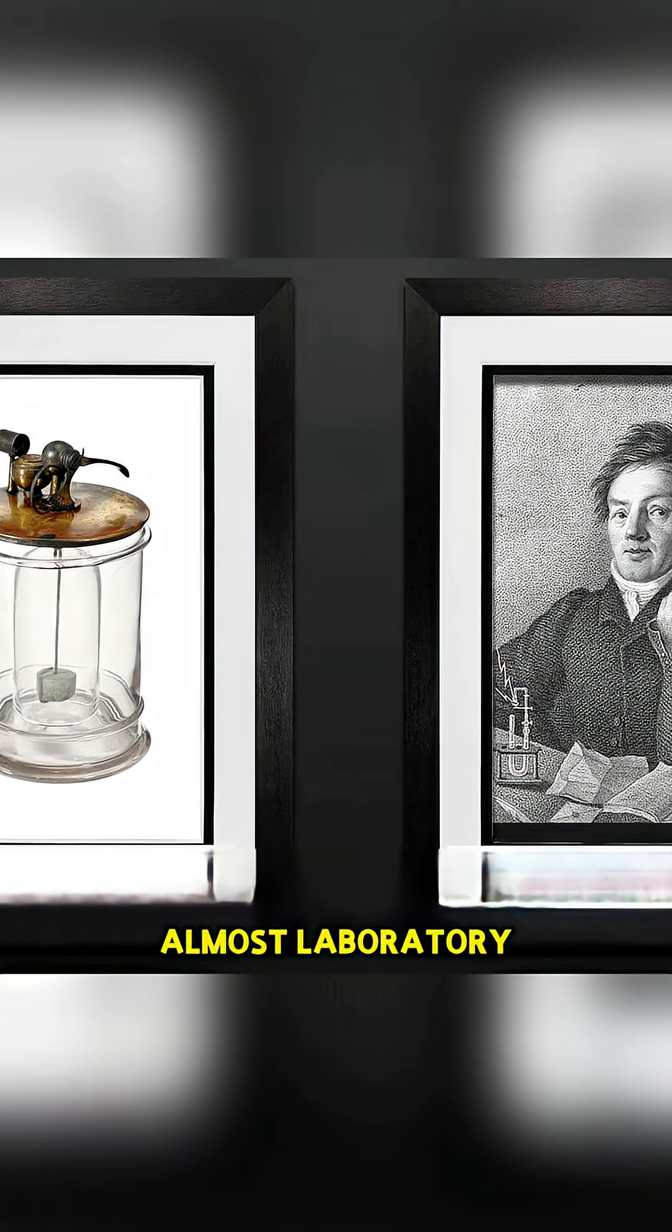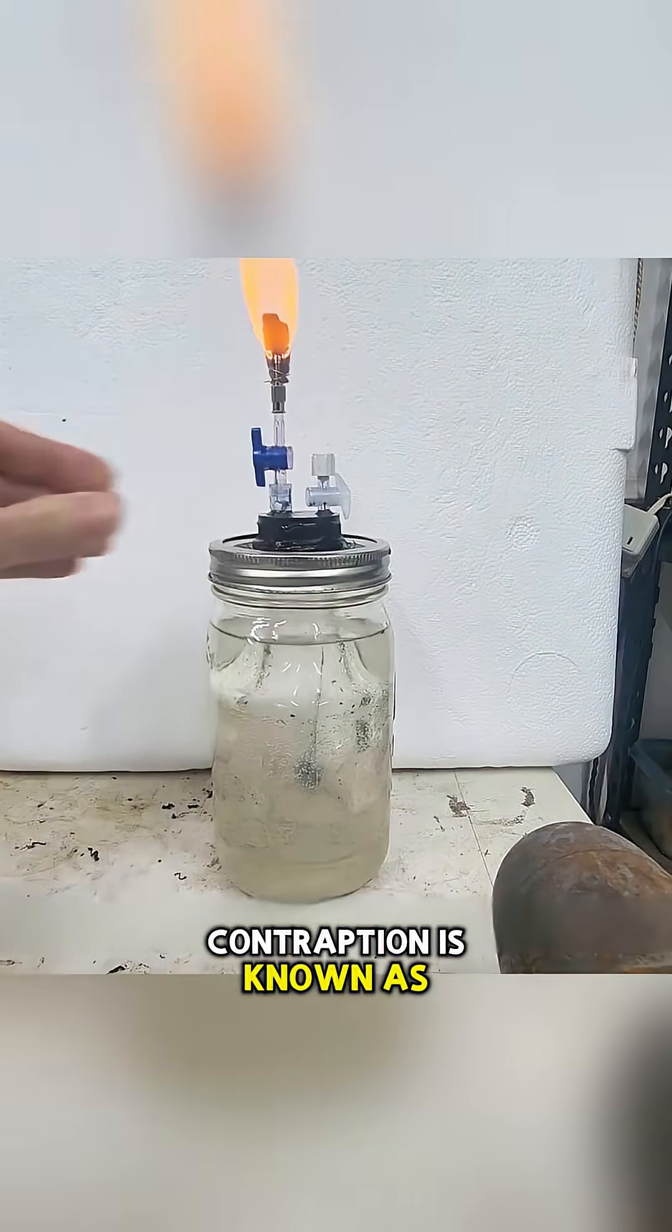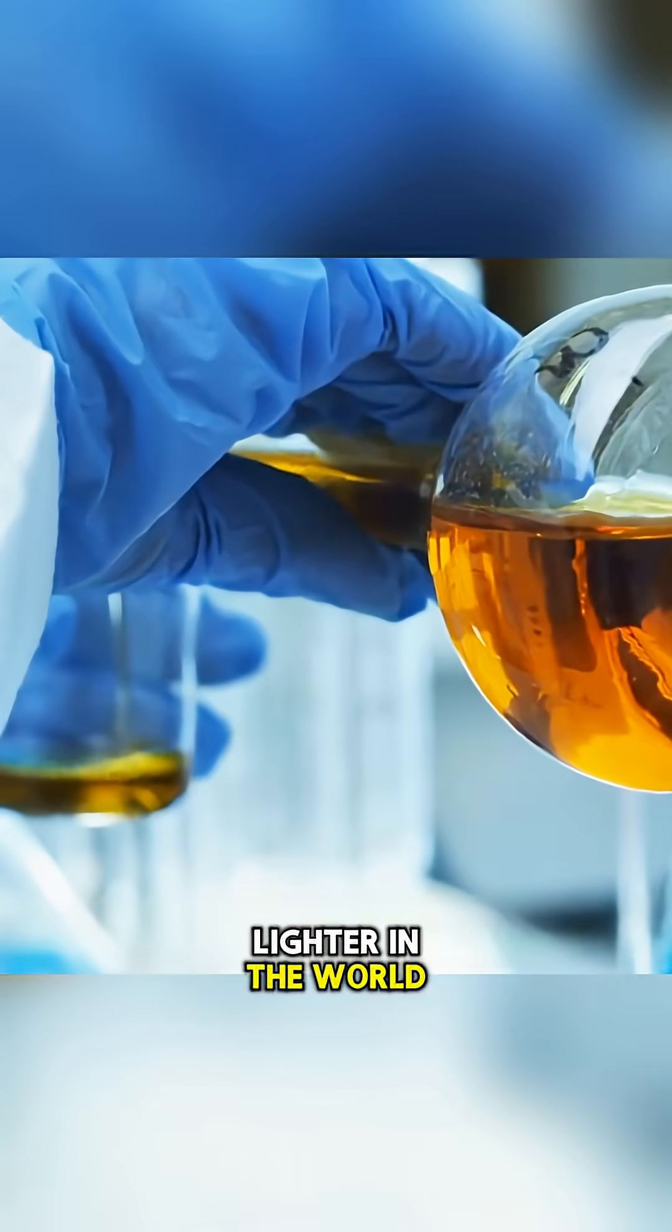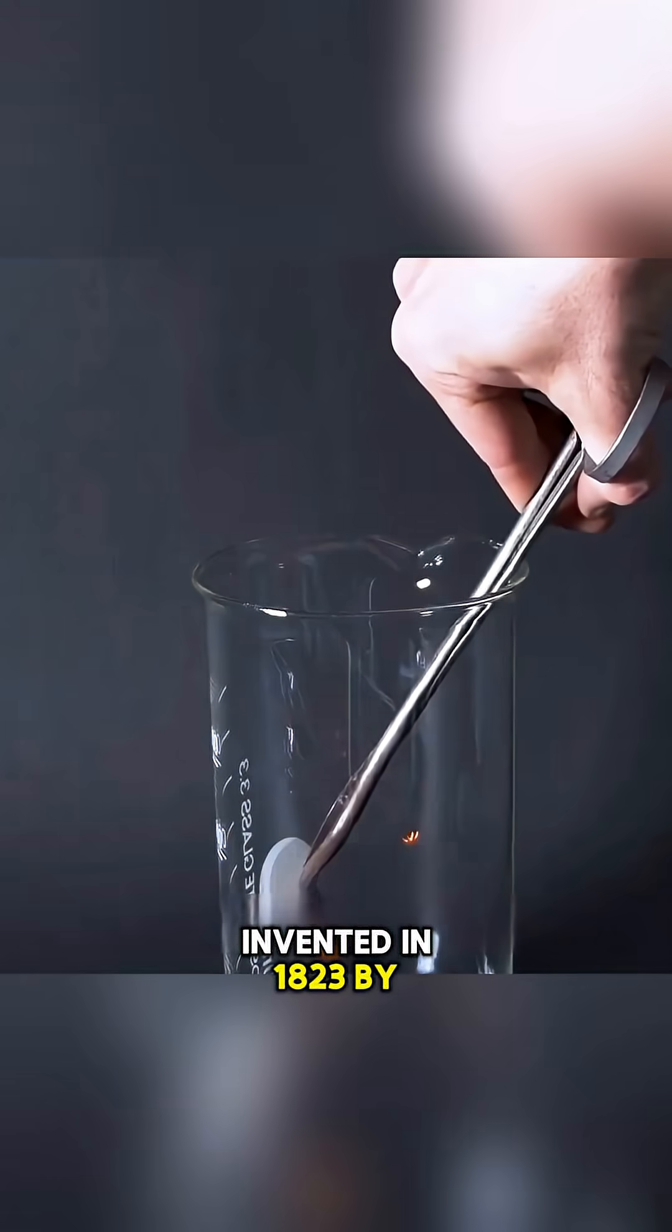This large, almost laboratory-like contraption is known as Doberiner's lamp, considered the very first lighter in the world, invented in 1823 by the German chemist Johann Doberiner.